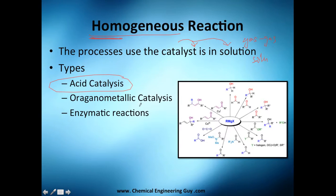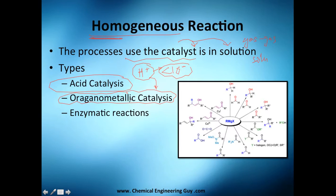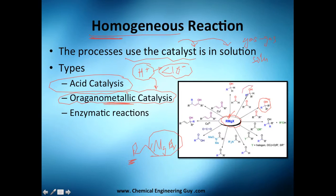There are many types of homogeneous catalysts. For example, in acid catalysis, hydrogen dissolves in water and even though it helps the reaction, it is not consumed. A very common example in organic chemistry is the Grignard reagent — named after a French chemist — which uses organometallics: R (the organic part) with magnesium and bromine (the metallic part), allowing a wide range of reactions.